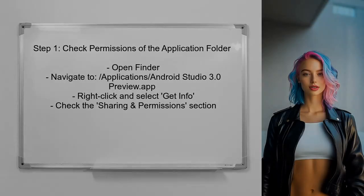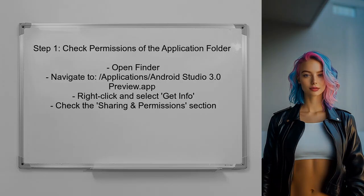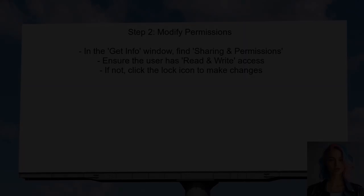To resolve the issue of write access in Android Studio, the user should first check the permissions of the application folder. This can be done by navigating to the folder in Finder. Next, the user should ensure that they have the necessary permissions to write to the folder. If the permissions are not set correctly, they can modify them in the Get Info window.